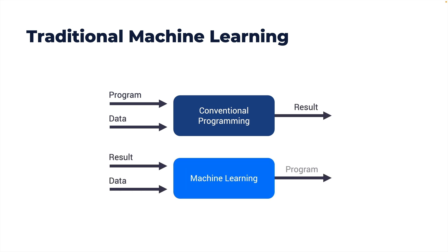At its core, traditional machine learning involves algorithms that learn patterns from data and then use these patterns to predict future data or make other kinds of decisions. A machine learning model is an entity that learns patterns from existing data to perform predictions on unseen data. The fundamental difference between conventional programming and machine learning is the way you write the program. In conventional programming, you create business logic that takes data as input and gives the result, whereas in machine learning, we take historical data and a mathematical algorithm to train the algorithm, evolving a pattern which is called the machine learning model.